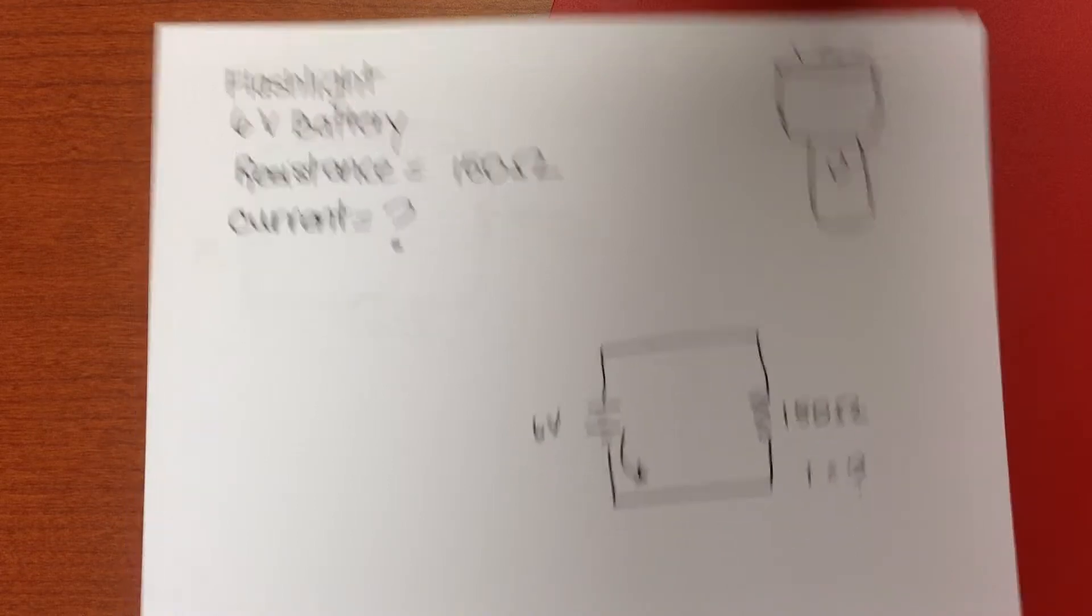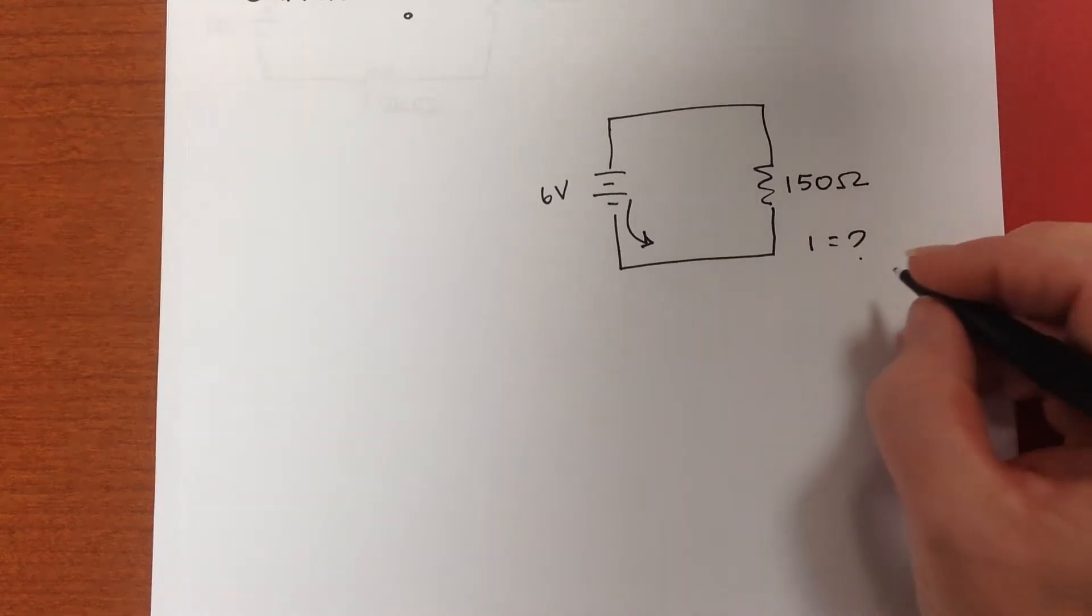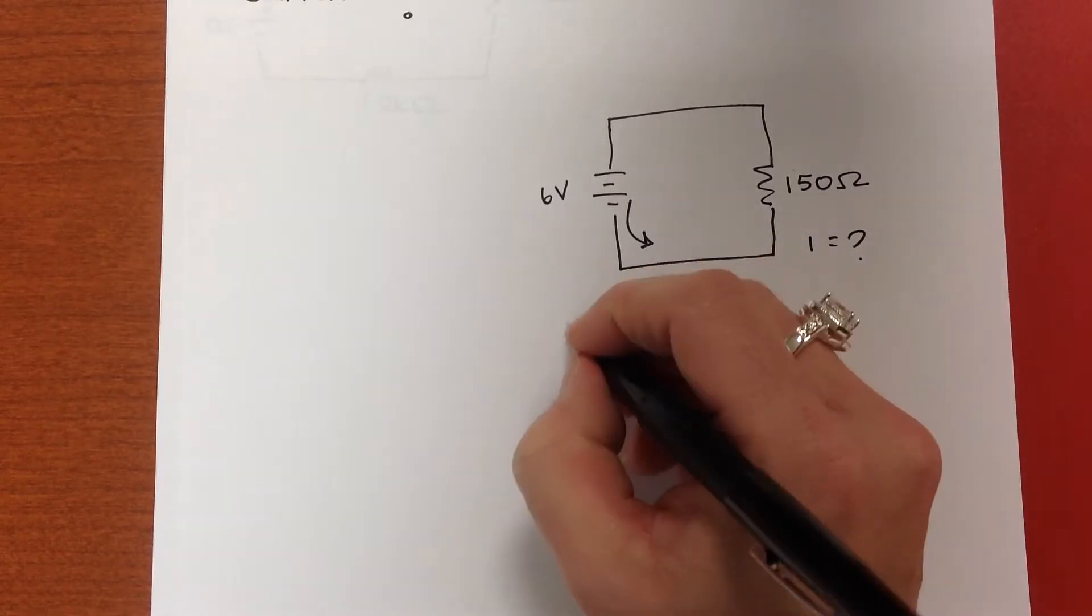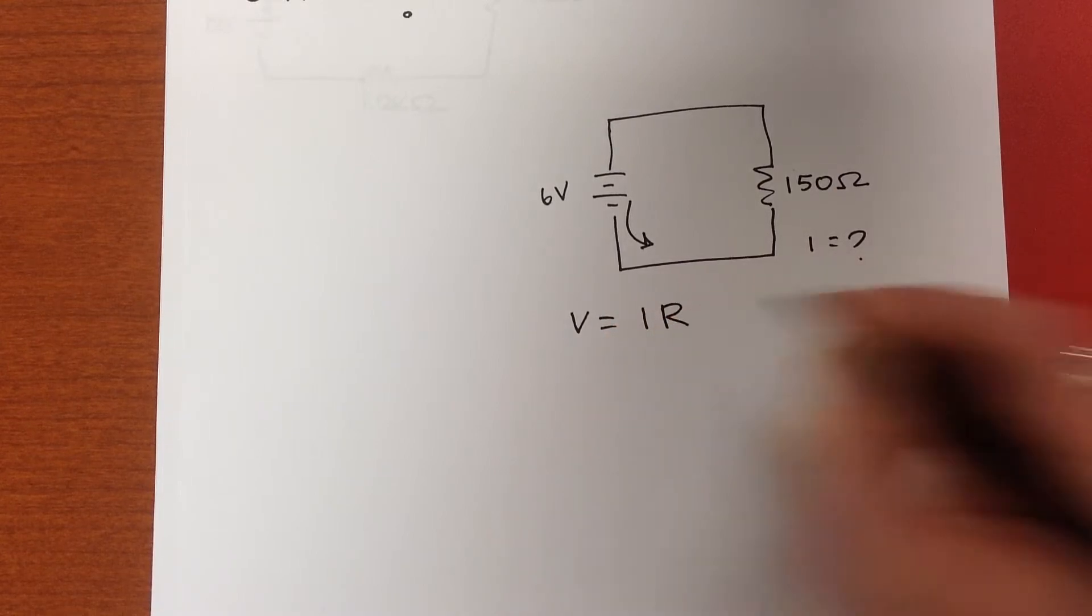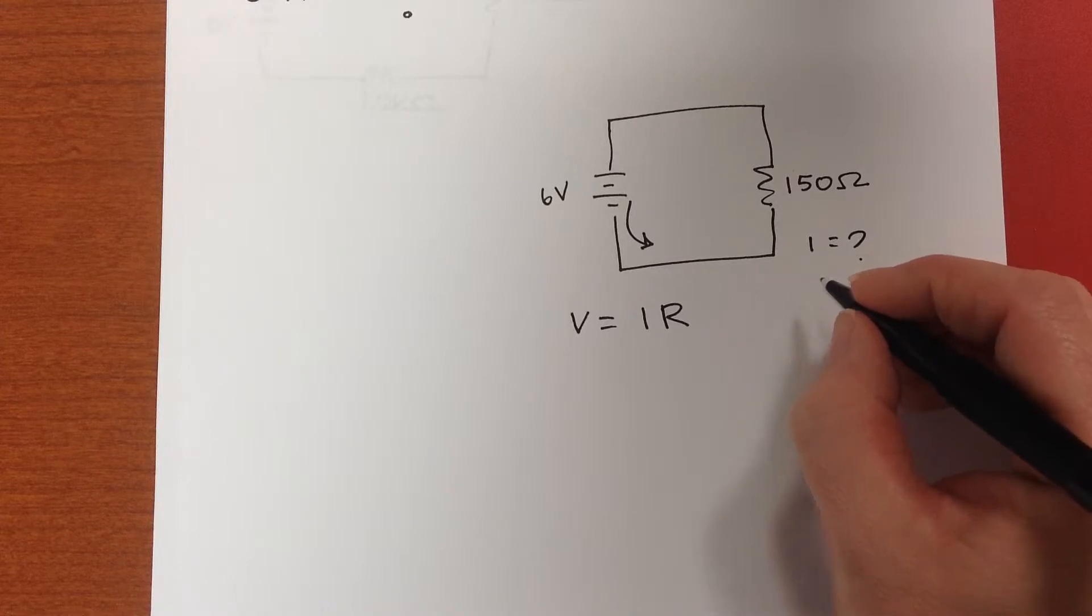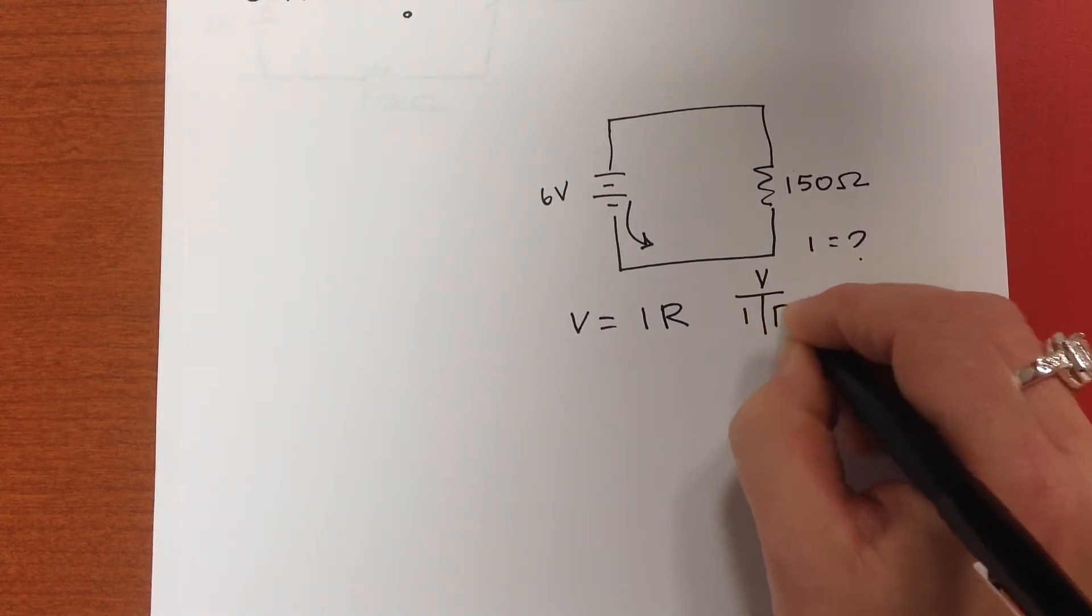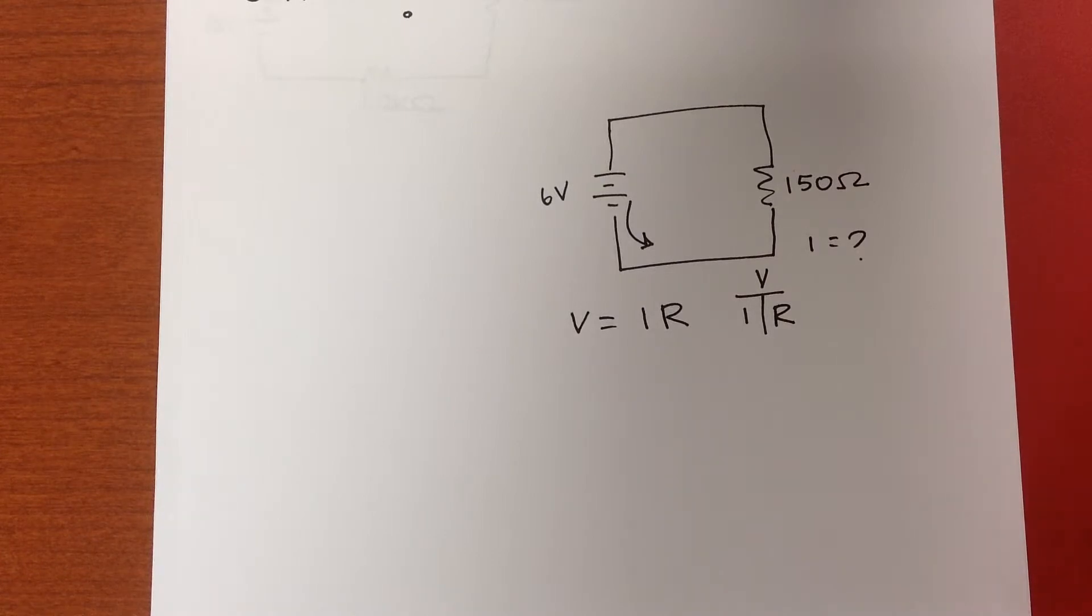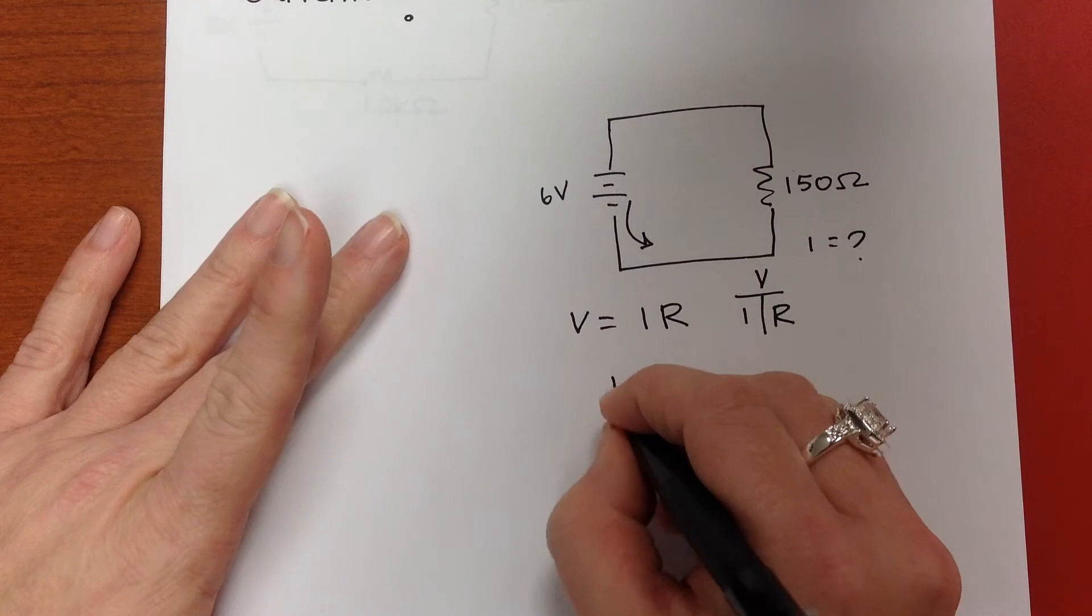So when we look at that problem, we can use Ohm's Law, which is V equals IR. We need to solve for I, so if you want to use your Ohm's Law triangle or circle, whatever you call it, if I cover up I, then I have I equals V divided by R.